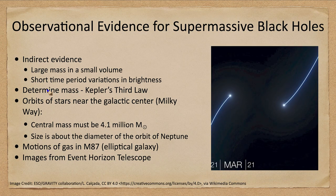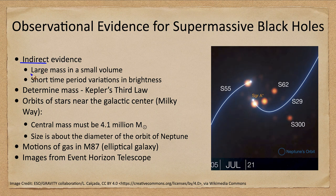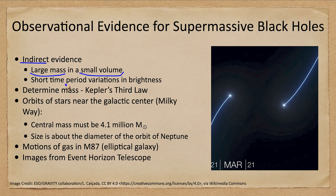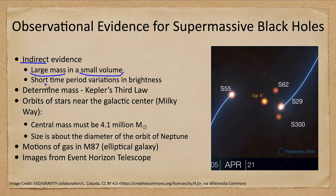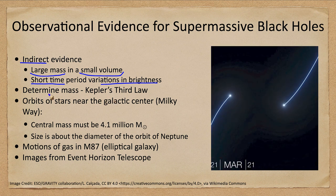So what is the observational evidence for a supermassive black hole? Well, first we can look at indirect evidence. We already talked about how there is a large amount of mass in a small volume — how can we get so much mass into such a tiny volume? And we previously looked at the short time period variations in brightness, all telling us that there's a lot of material collapsed into a very small size.